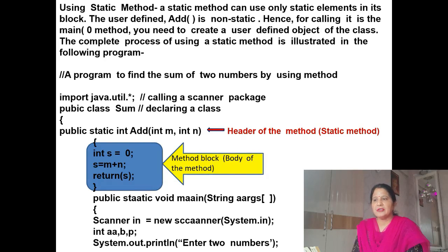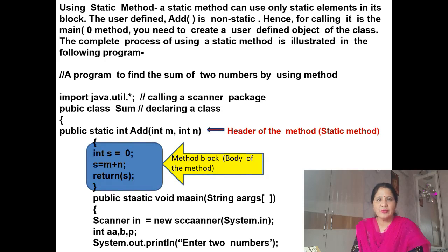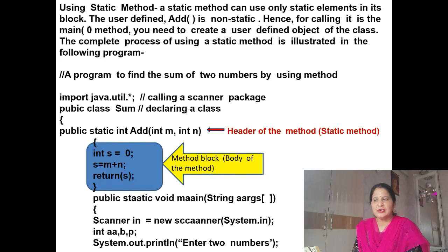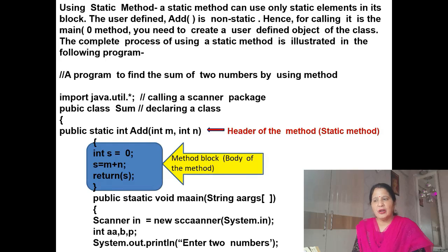Now we will write the function body — the method block. Int s is equal to 0, because we don't know the sum. Then the formula: s is equal to m plus n. Now 'return s' — we will not write System.out.println(s). Because we are doing programs based on the function, we write return s. This is the returning value after the sum of two numbers. Now curly bracket closed.